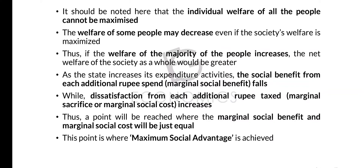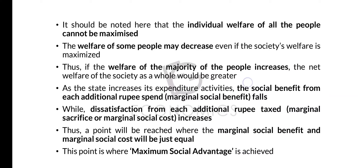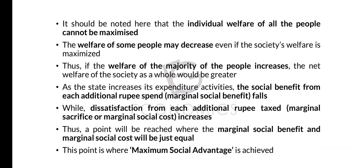For example, if present expenditure is 100 crore and the government intends to increase it to 150 crore, it collects the extra 50 crore from the people through taxes. When the government spends 50 crore more, there is of course an increase in utility for the public. But the increase in utility is decreasing — this is the same principle as diminishing marginal utility. The social benefit increases as a whole, but in marginal terms the marginal social benefit decreases, because the increase in social benefit comes at the cost of increased taxes, and therefore marginal social benefit decreases.